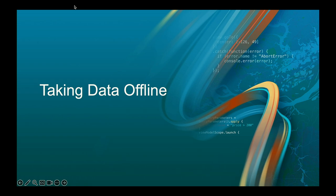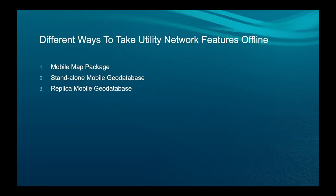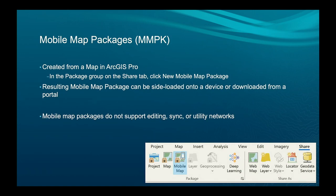Let's talk about taking data offline. There are a couple of different ways to take utility network features offline. The first is with a mobile map package, the second is a standalone mobile geodatabase, and the third is what we call a replica mobile geodatabase. Mobile map packages are created from a map in ArcGIS Pro on the Share tab. They don't support editing, sync, or unfortunately utility networks either.